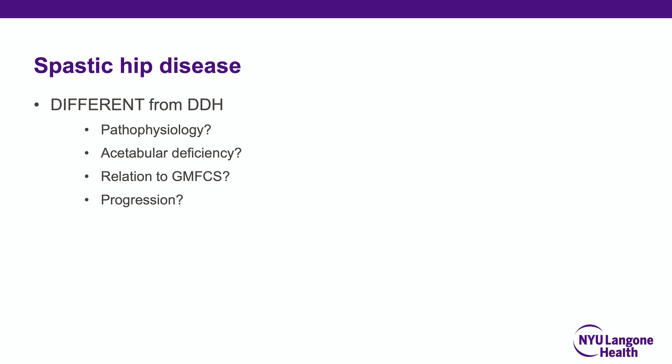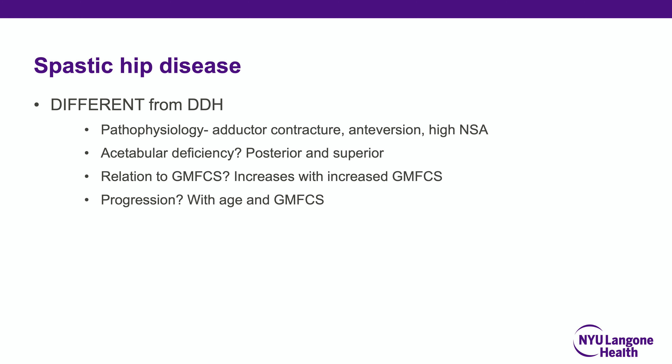Spastic hip disease is often tested and is quite different from DDH in pathophysiology, acetabular anatomy, and its relation to GMFCS level. It is driven by adductor contractures, overall muscle tone, extreme anteversion, and neck shaft angle. Acetabular deficiencies are posterior and superior — as opposed to DDH, which is more of an anterior deficiency. The risk correlates strongly with GMFCS: under 10% in GMFCS 1, up to 80% in GMFCS 5.